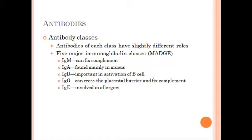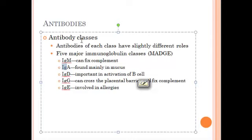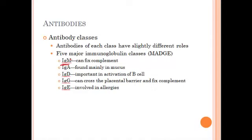Then the other letter represents what that immunoglobulin is, the type of antibody it is. So immunoglobulin M, this is the type of antibody that can fix or activate the complement, and we'll see what that is here in just a second.